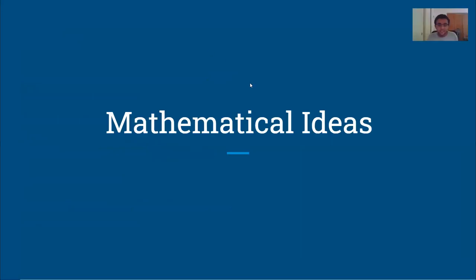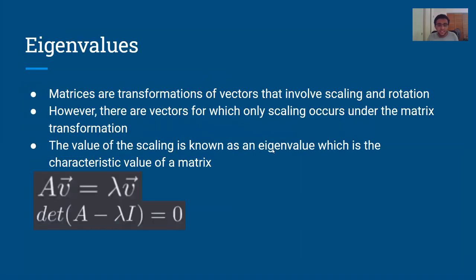To understand quantum mechanics, it's a very good idea to hold on to a lot of the mathematics. One key tool in the mathematical tool belt is eigenvalues. Matrices in linear algebra are defined to be the transformations of vectors — transformations such as scaling and rotation in a vector space. There are certain vectors for which the matrix does not rotate, but only scales them, and the value by which it's being scaled is called an eigenvalue.